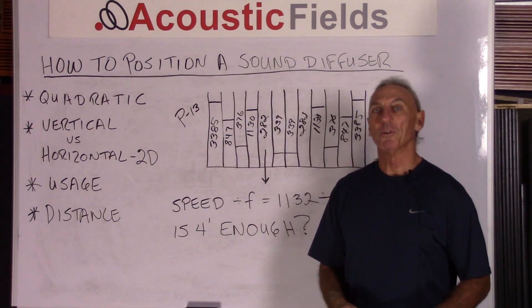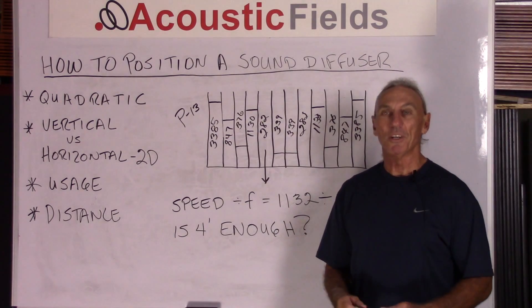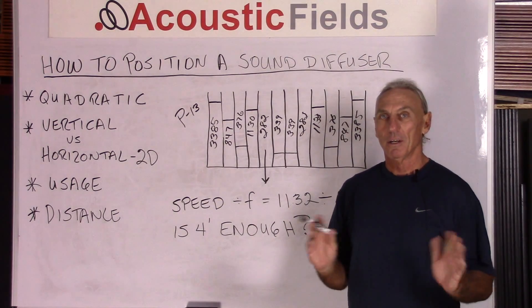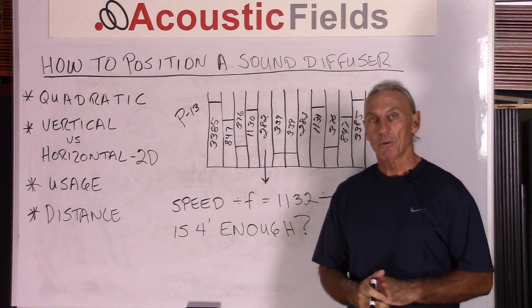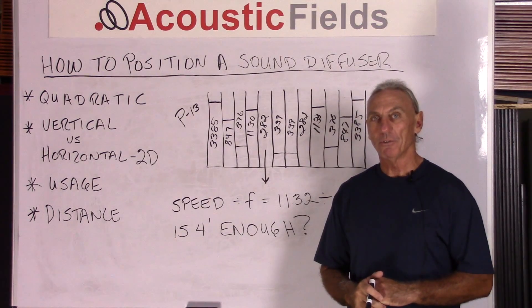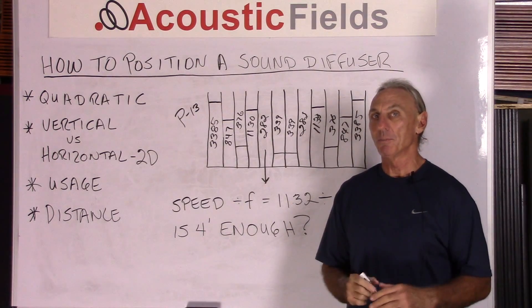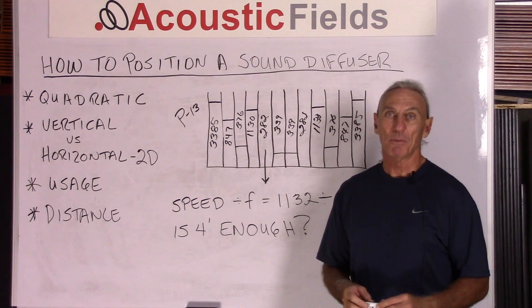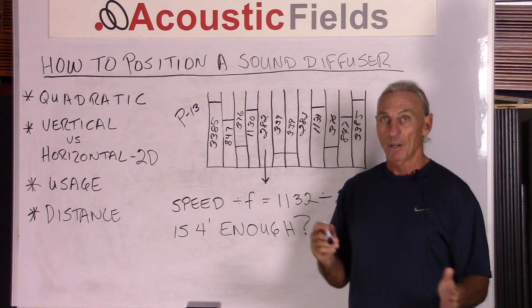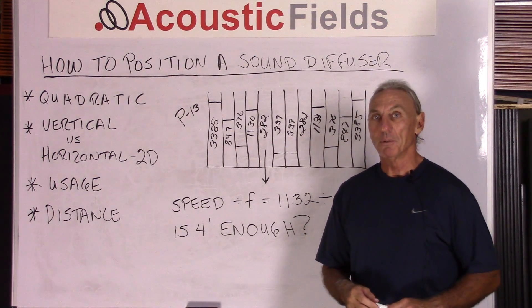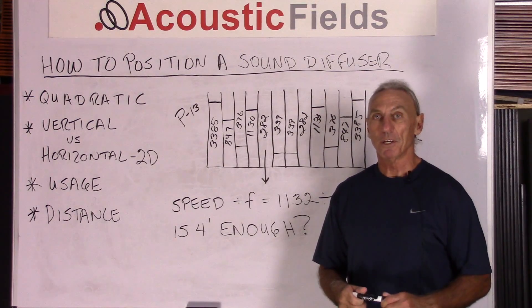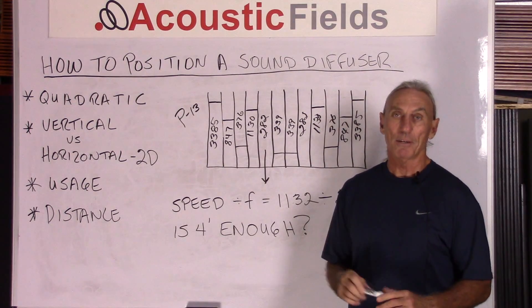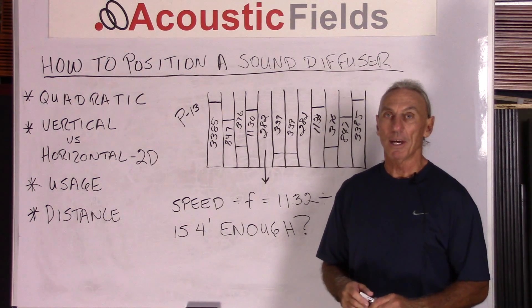Hi everyone, Dennis Foley from Acoustic Fields. Today we're going to talk about how to position a sound diffuser. We all know that we prefer quadratic diffusion here at Acoustic Fields for two reasons: it's predictable and it's consistent in its performance. So you can actually select the frequency response of the diffuser that you want to use for that particular room position, and that's what we're going to talk about today.